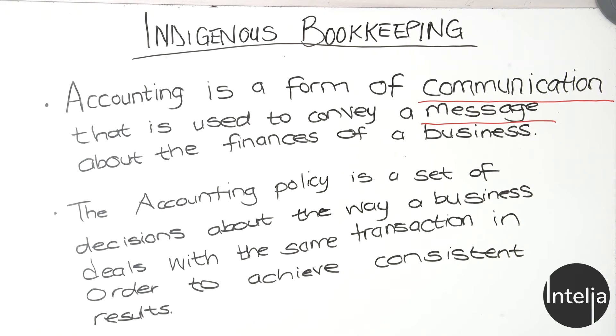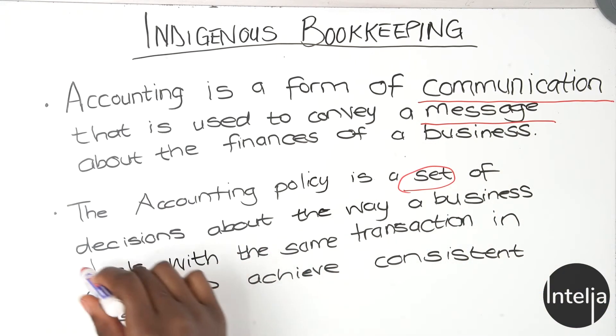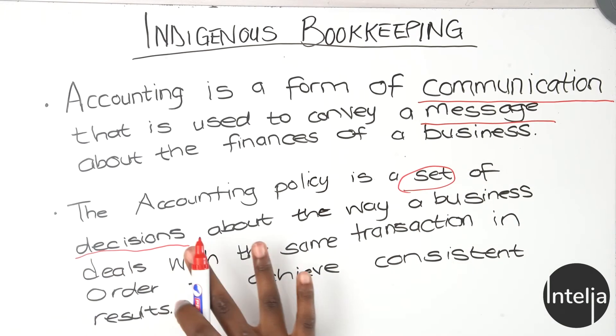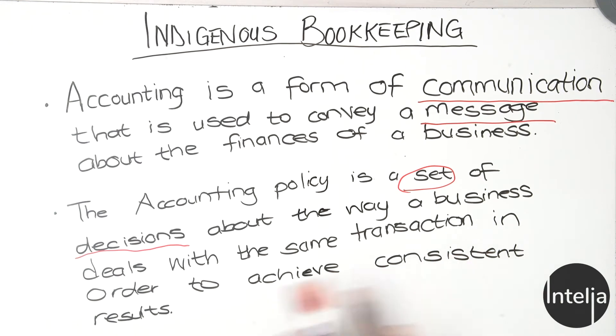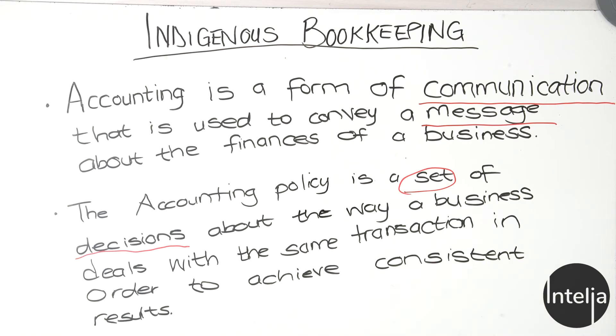A business should not run without a proper accounting system. The next concept is accounting policy, which is a set of decisions about the way a business deals with the same transaction in order to achieve consistent results. When we create final financial statements at the end of the year as a detailed summary of what happened, you'll find you've paid rent 12 times — it's the same transaction repeated, and the accounting policy says similar transactions should be dealt with similarly.